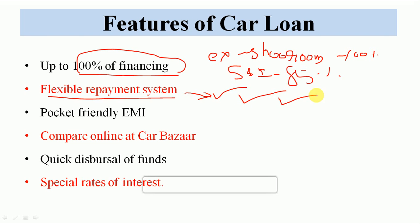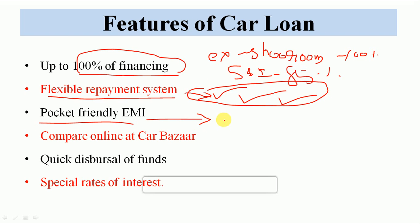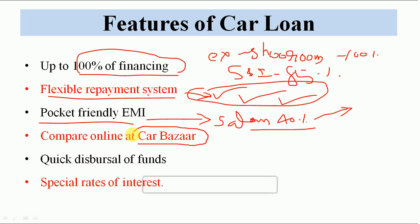SBI jo hai woh aapko on-road price jismein RTO aur insurance vagera bhi add hota hai uska 85% de deta hai. Bahut saare bank 100% financing kar dete hain. Flexible repayment system hai — woh aapse poochte hain ki aap kitne saalon mein dena chahte ho, EMI kitne banwana chahte ho. Aap apni income ke accordingly EMI banwa sakte ho — pocket friendly EMI. Aapki salary ka lagbhag 40% tak aap loan le sakte ho. Carbazar.com se aap compare kar sakte ho alag-alag banks kitna loan de rahe hain alag-alag rate pe.